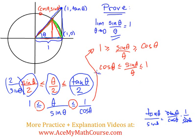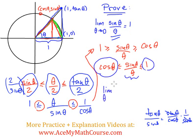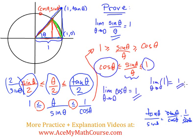Using the Squeeze Theorem, if we can prove that the limit of both bounds as θ approaches 0 is 1, then the limit of sin(θ)/θ will also be 1. The limit as θ→0 of cos(θ): we can just plug in 0, and cos(0) = 1. And the limit as θ→0 of 1 is just 1, because that's a constant function.